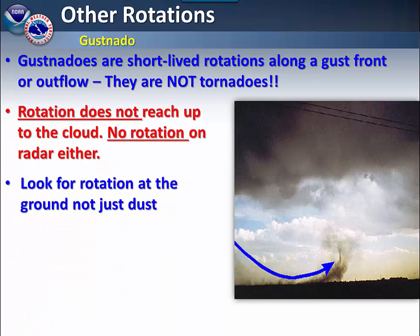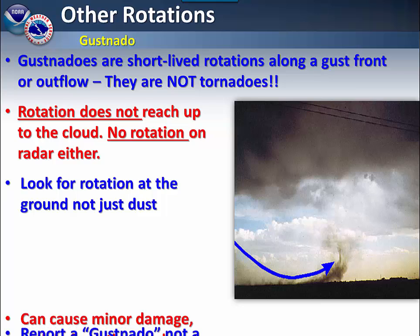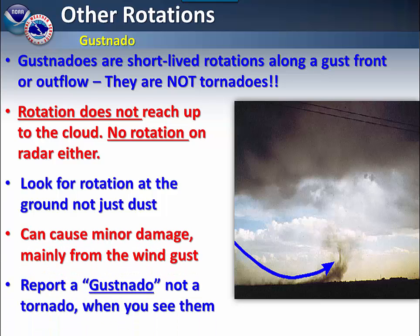It is important to note that gustnadoes are not tornadoes. The rotation does not reach up into the cloud, and as such we cannot see rotation on radar either. Out on the field, look for a rotation at the ground, not just dust being blown up in an actual rotation. Gustnadoes can cause some minor damage, mainly due to the strength of the winds. If you do happen to see one, report a gustnado, not a tornado.